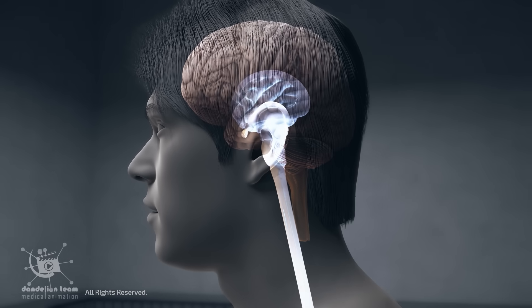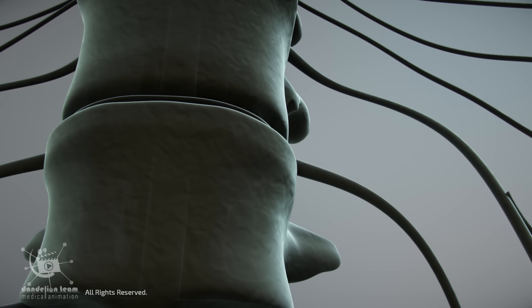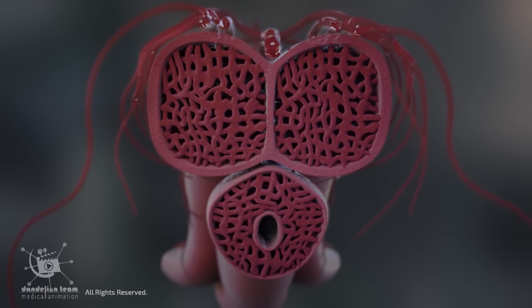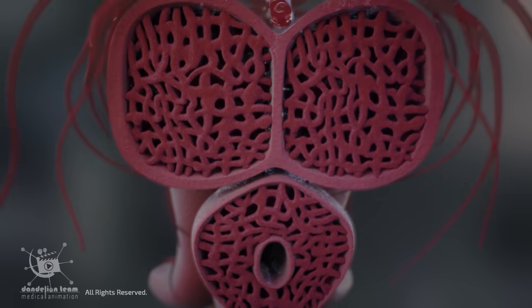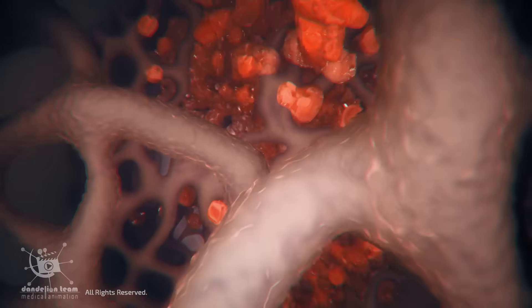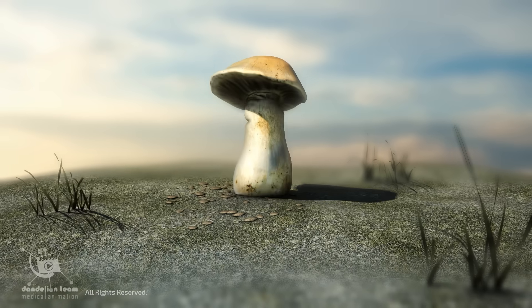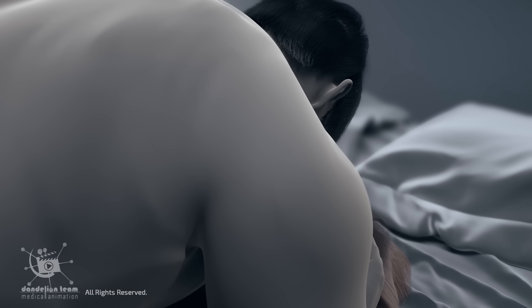The brain sends signals through the spinal cord to the pelvic nerves, increasing blood flow to the pelvic region. This causes the erectile tissues, or corpora cavernosa, in the penis to fill with blood, resulting in an erection.